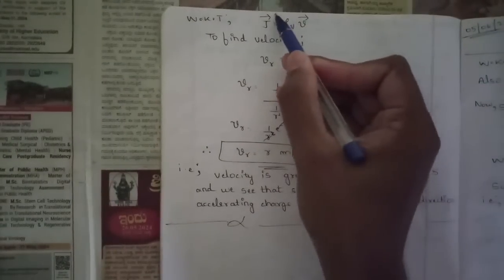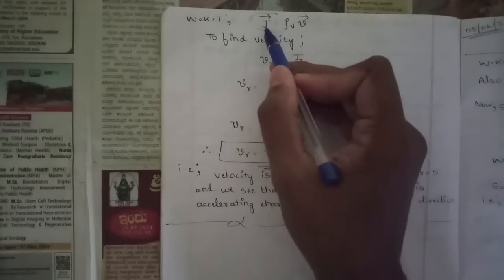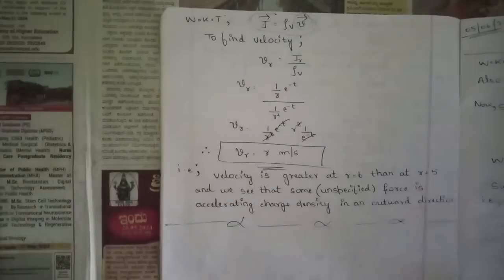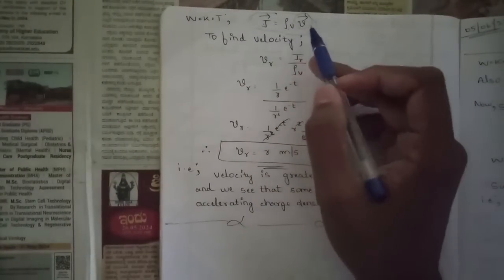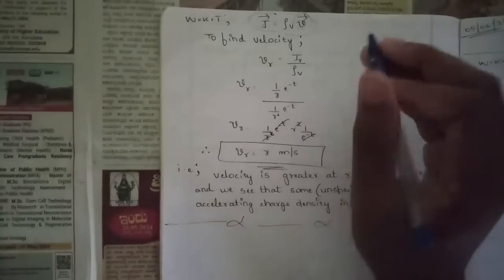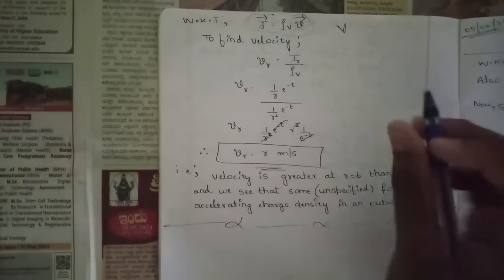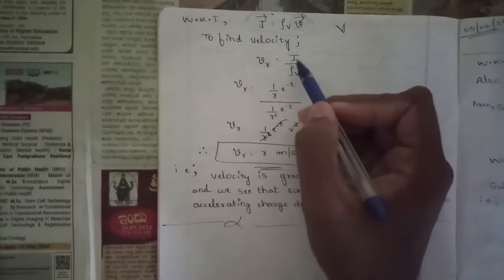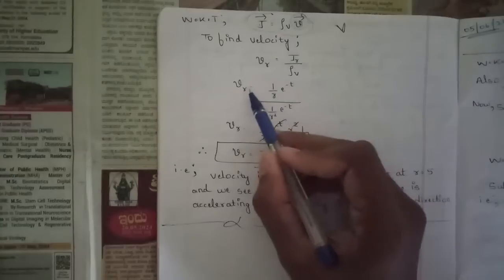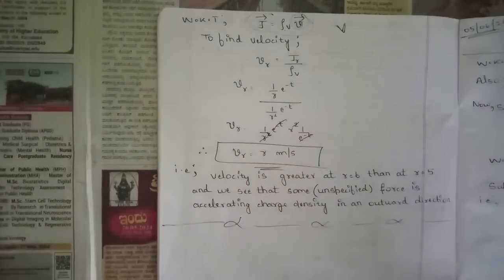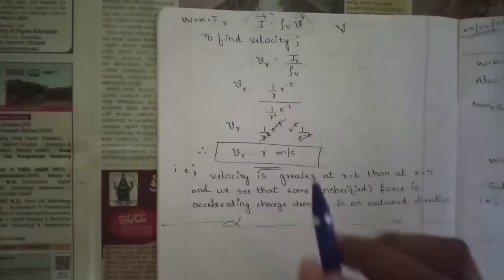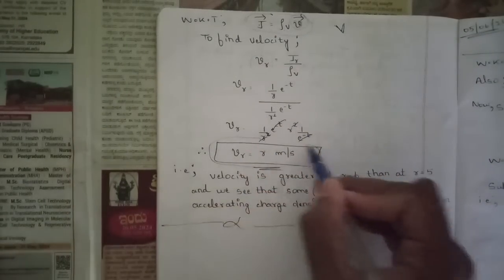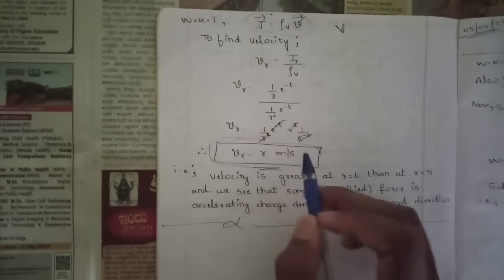We have one more relation: J = rho_V · V, where V (small letter) is velocity, not voltage. Capital V represents voltage; small v is velocity. To find velocity, rearrange: V = J / rho_V. For the radially outward component, V_r = J_r / rho_V. Substituting the known values of J_r and rho_V and simplifying: